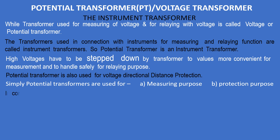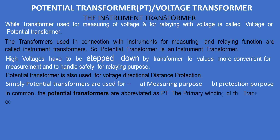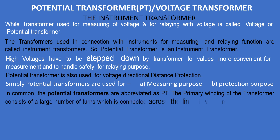In common, potential transformers are abbreviated as PT. The primary windings of the transformer consist of a large number of turns, which are connected across the line in which measurements have to be taken or lines are to be protected.